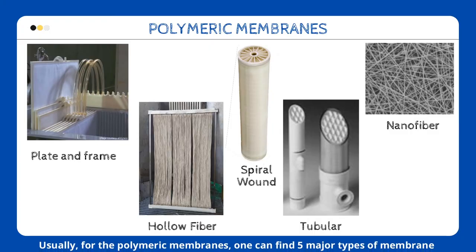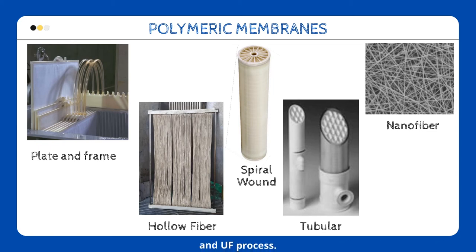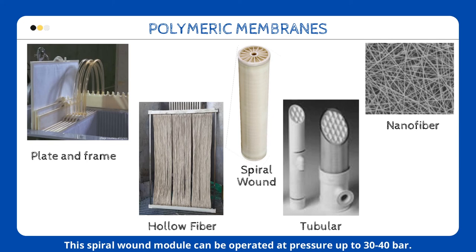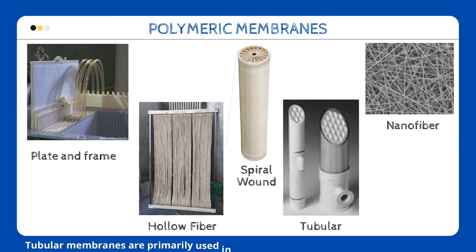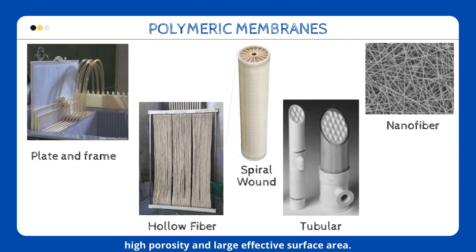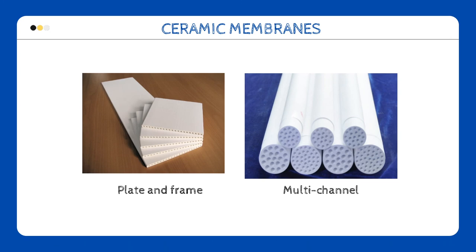There are quite a number of membrane configurations. For polymeric membranes, one can find five major types in the market. Plate and frame, as well as hollow fiber membranes, are typical configurations for microfiltration and ultrafiltration processes. Spiral wound membrane modules are used in nanofiltration and reverse osmosis processes, and can be operated at pressures up to 30 and 40 bar. Tubular membranes are primarily used in filtration processes due to their ability to handle process streams with high concentrations of solids. In recent years, nanofibre membranes are receiving great attention owing to their extremely high porosity and large effective surface area. For ceramic membranes, the two main configurations are plate and frame, and multi-channel ceramic.